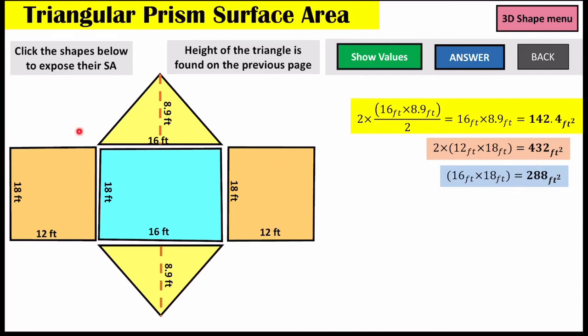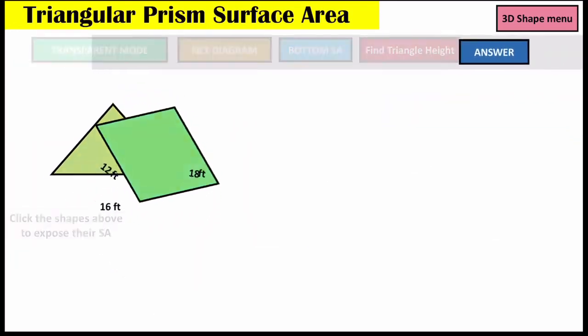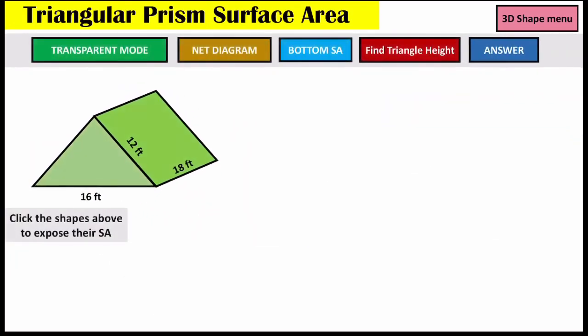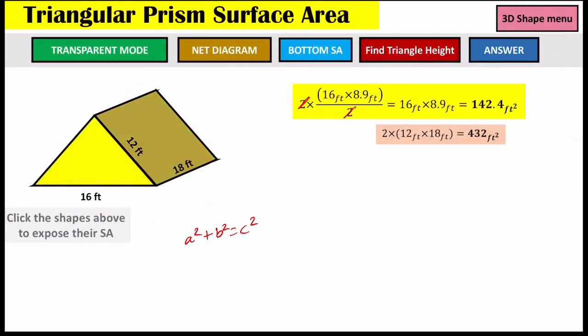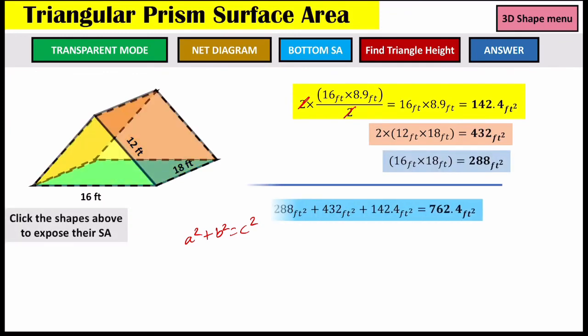Now we've found the surface area for each shape. Adding them all together — 142.4 plus 432 plus 288 — we get our answer of 762.4 feet squared. You can take a look at that here, along with the full surface area breakdown at the bottom.